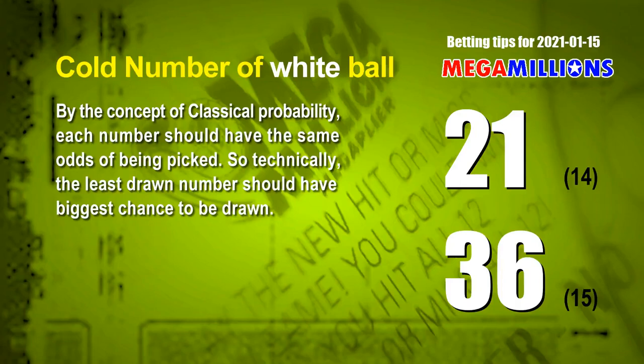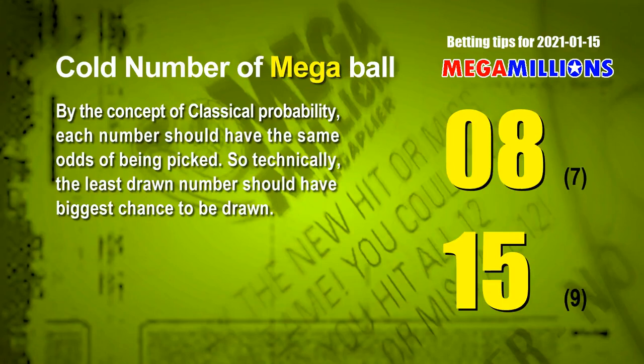We have two more tips: cold numbers and overdue numbers. By classical probability, each number should have the same odds of being picked, so the least-drawn number should have the biggest chance to be drawn. After counting hundreds of results, the two coldest white balls are 21 and 36 — white ball 21 has been drawn only 14 times in the last 335 draws. The two coldest Mega Balls are 08 and 15 — Mega Ball 08 drawn only 7 times, Mega Ball 15 drawn only 9 times in the last 335 draws.